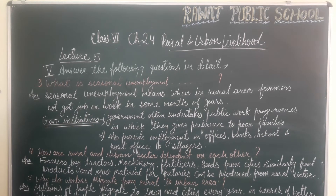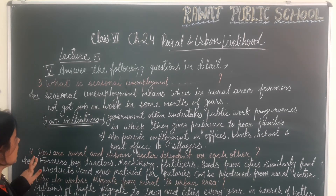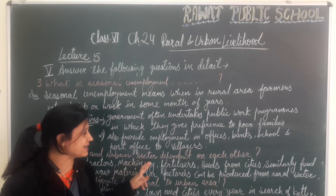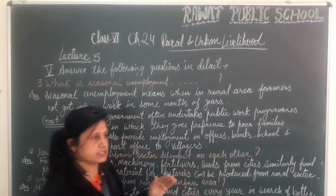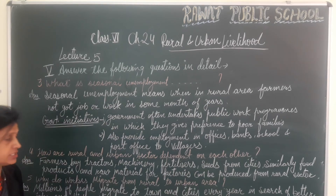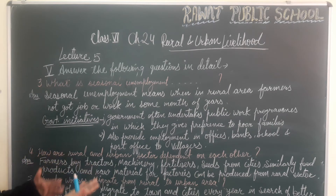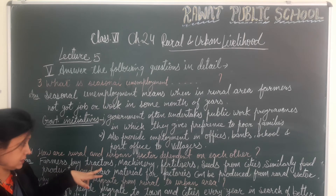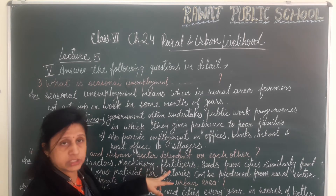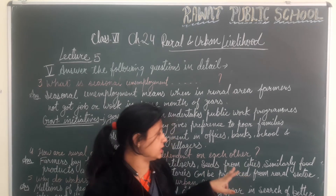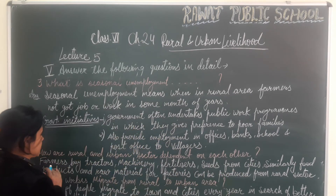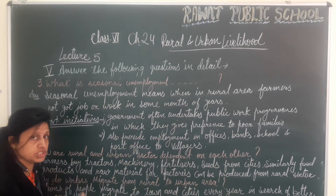Now question number four is: how are rural and urban sectors dependent on each other? How do rural and urban areas depend on each other? They are dependent because farmers buy tractors, machinery, fertilizers, and seeds from the city.